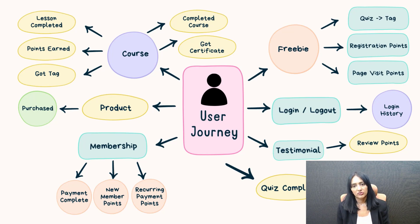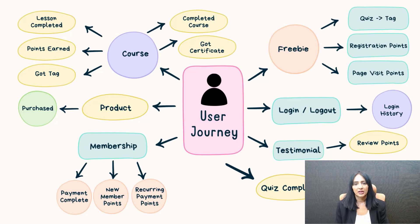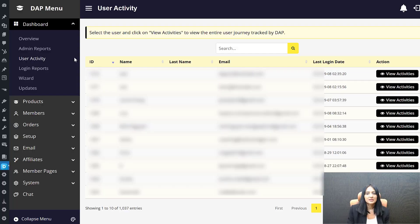So let me take you to the back end. I'll give you a quick demo of what we have done. I'll show you step-by-step, as members go through your membership site and do different things, how this new member activity feature will track everything and report it to you. This is the back end of DAP, and you will now find a new option — User Activity — under Dashboard.